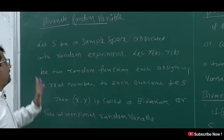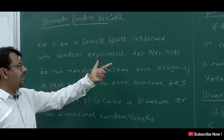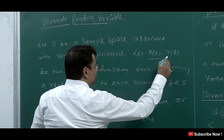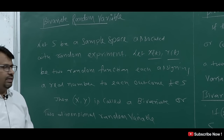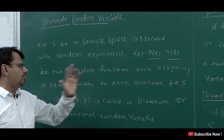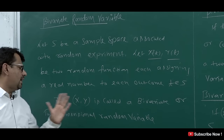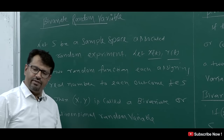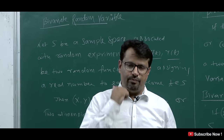First I am going to tell you what is Bivariate Random Variable. Let S be the sample space associated with the random experiment. Let X(T) and Y(T) be two random functions, each assigning a real number to each outcome T belonging to S. Then (X, Y) is called a Bivariate Random Variable or two-dimensional random variable. I am going to take an example here just about this.